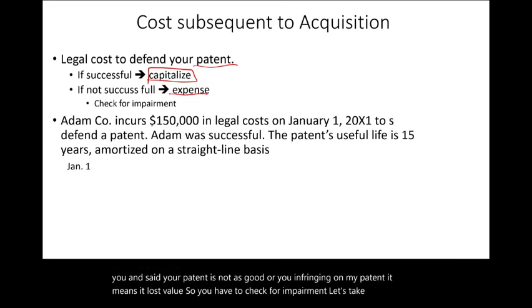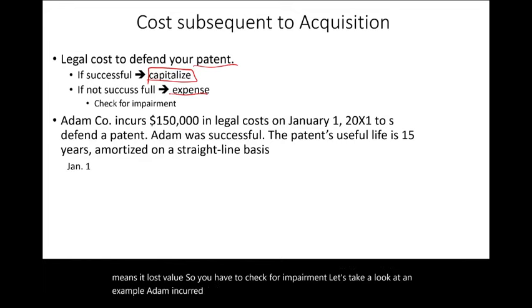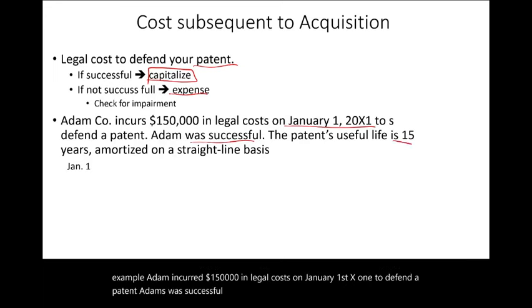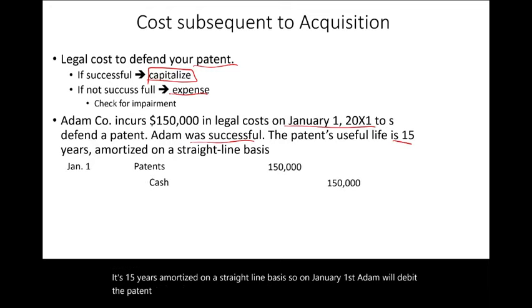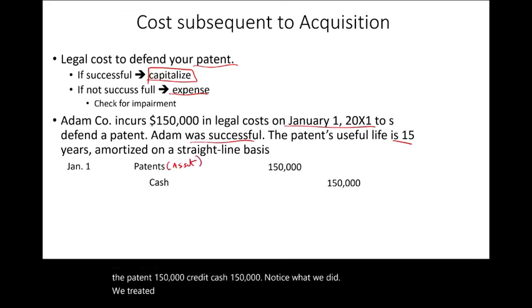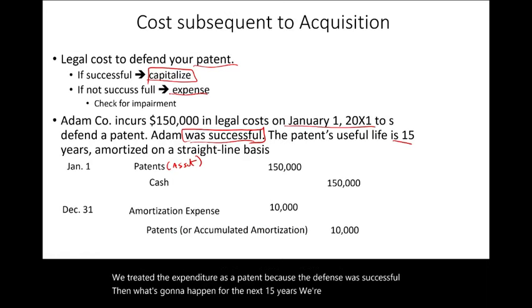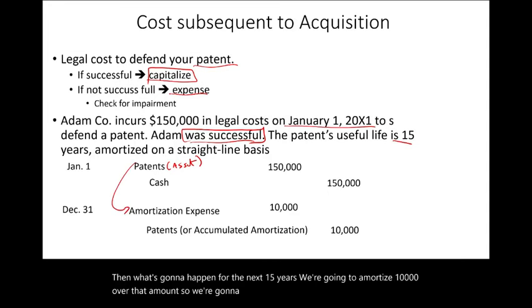For example: Adam incurred $150,000 in legal costs on January 1, X1 to defend a patent, and Adam was successful. The patent's useful life is 15 years, amortized on a straight-line basis. Adam debits the patent $150,000 and credits cash $150,000, treating the expenditure as part of the patent asset. Then over the next 15 years, Adam amortizes $10,000 per year, expensing the cost gradually.